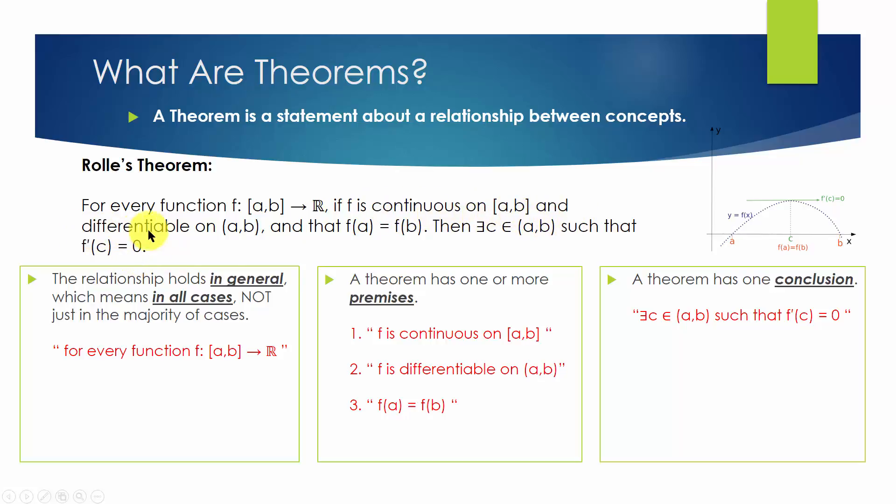and differentiable on open interval (a, b), and f(a) equals f(b), then there exists a c in open interval (a, b) such that f prime c equals 0.